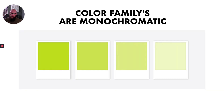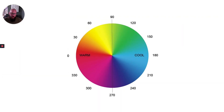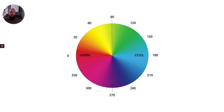Color families are monochromatic, like these shades of yellow-green. This version of the color wheel situates colors on a 360-degree spectrum, divided into warm and cool colors. Colors at zero degrees are the absolute warmest in the spectrum, while colors at the 180-degree mark are the absolute coolest. Colors at 90 and 270 degrees represent the transitional colors between warm and cool, and it's often harder to tell if a color is warm or cool the closer it gets to that midline.